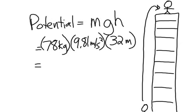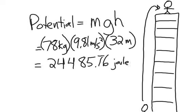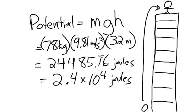And so if we simply multiply those all together we get 24,485.76 joules. And if we do significant digits that's 2.4 times ten to the fourth joules of energy that my body has at the top of a building.